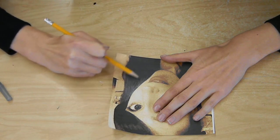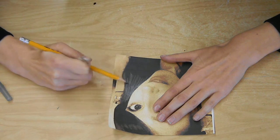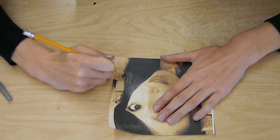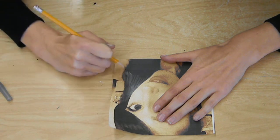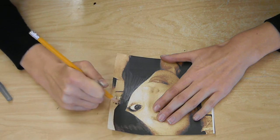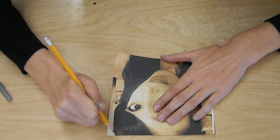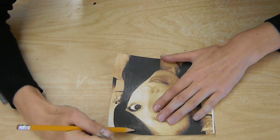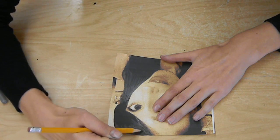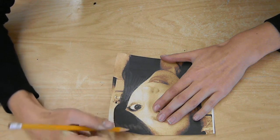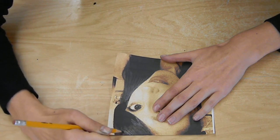Over here it's a little bit lighter in this section, so I'm going to just kind of go around that so I know that when I'm doing my print I'm not going to carve that part out. Pretty much I'm just coloring over my photograph, all of my features.